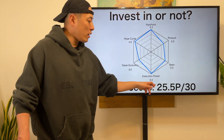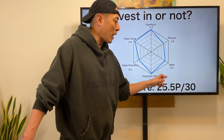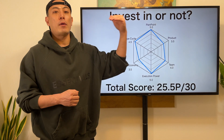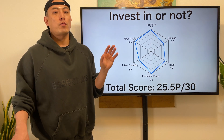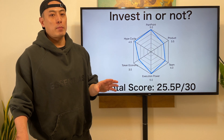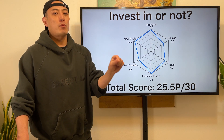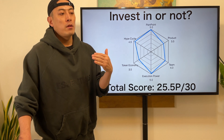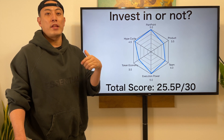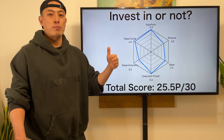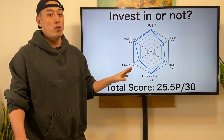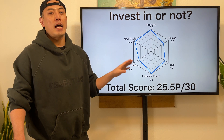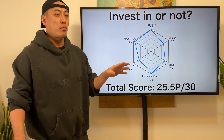So the total score is 25.5 points. My minimum investment criteria is over 25 points. From this perspective, I'm going to recommend investment in Lens Protocol tokens. I have a pretty big expectation for the next progress on Lens Protocol, so let's pay attention to any kind of their next updates on their project.